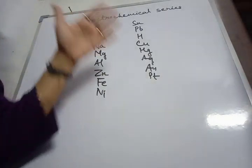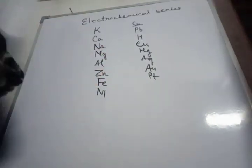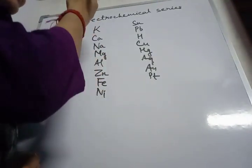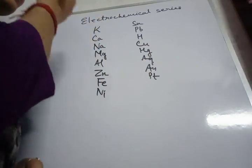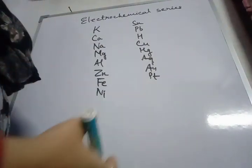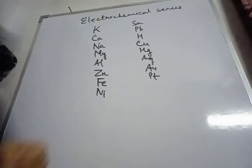The metals are arranged in decreasing order of their tendency to lose electrons. That means the metals at the top readily lose electrons, while the metals at the bottom lose electrons with difficulty.